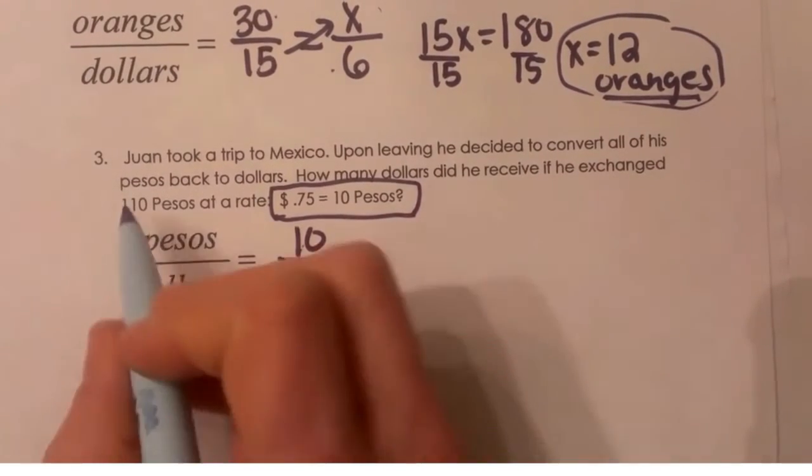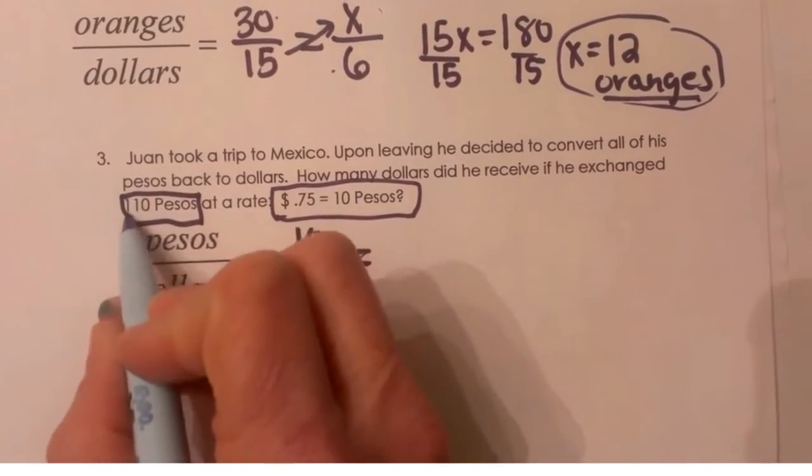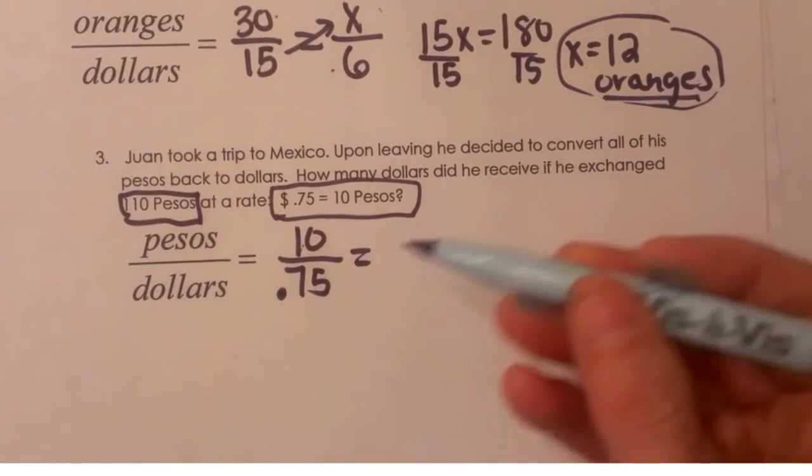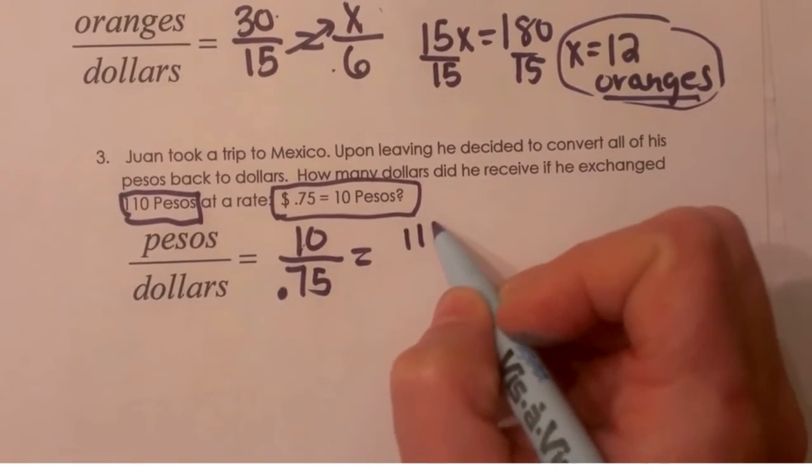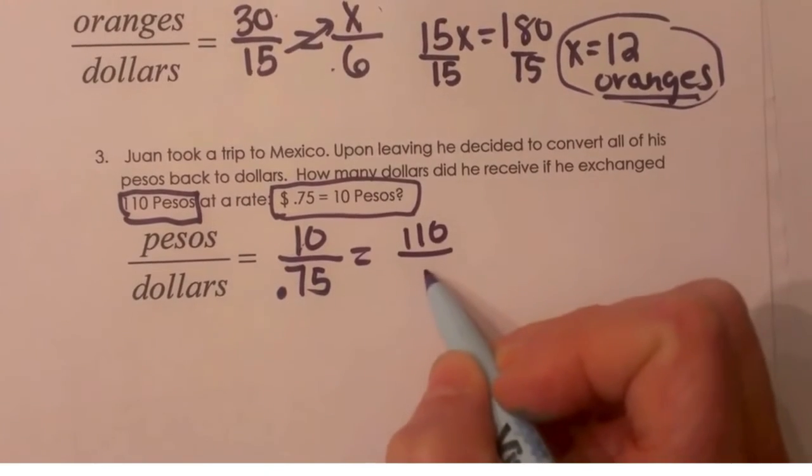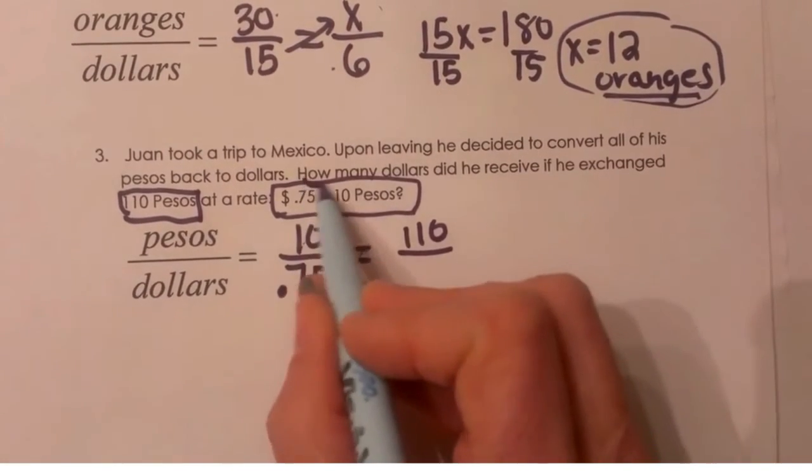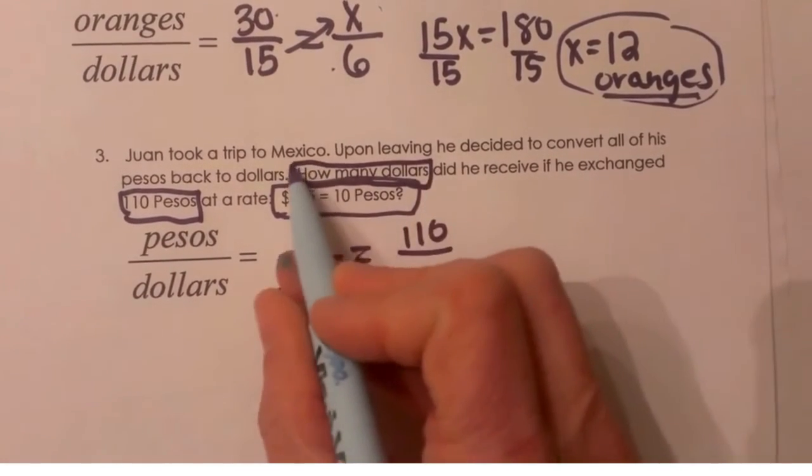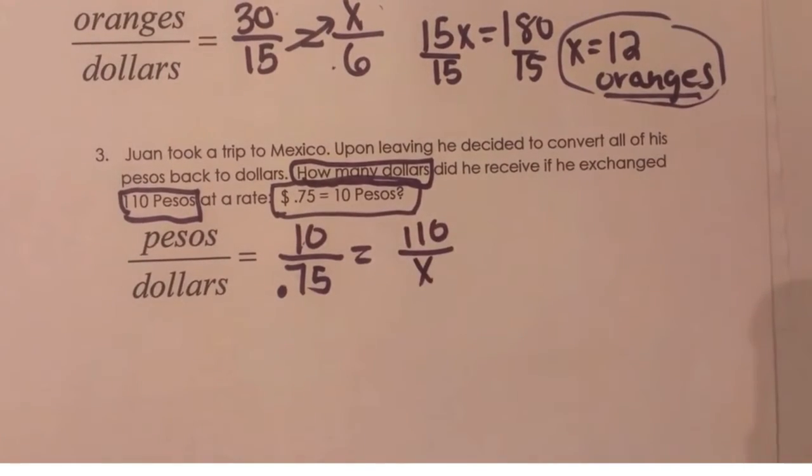So let's set up 0.75 or 75 cents is to 10 pesos. And what did he have? He had 110 pesos. Well the pesos we've got set up on top so I've got to put 110 up here. And I'm going to put my unknown dollars because remember, go back to the question, how many dollars. We don't know our dollars, so that's my X.